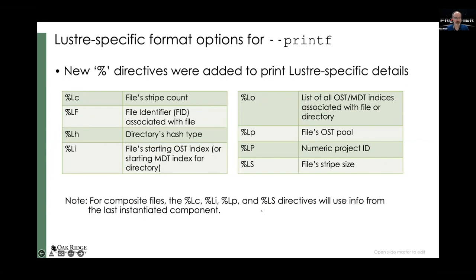In addition to the generic printf options, we added several that were for Lustre-specific details. As I mentioned before, all of these begin with percent capital L. We've included support for things like file stripe count, the FID, directory hash type, a file's starting OST index — or if it's a directory, the MDT index for the directory. You can also list out all of the OSTs or MDTs associated with the file or directory, as well as the file's pool, numeric project ID, and stripe size. For composite files, some of these — like stripe count, OST pool — will print the information based on the last instantiated component, not for every single component.